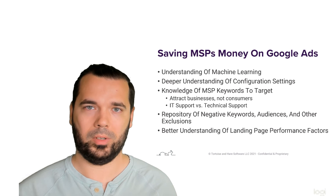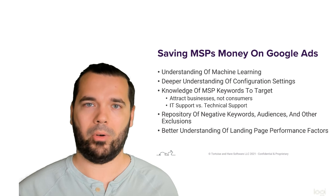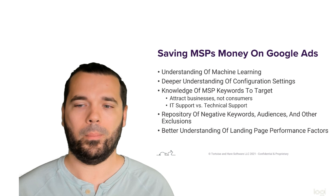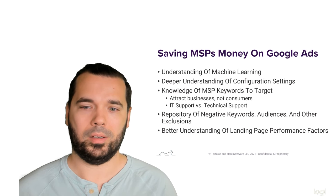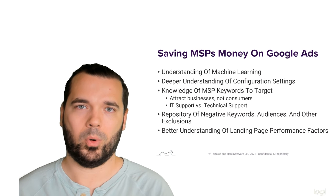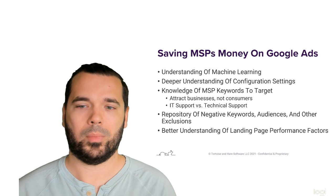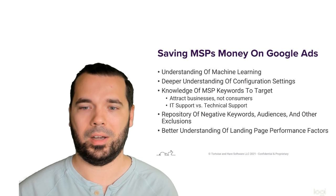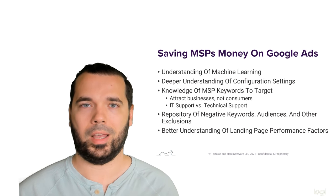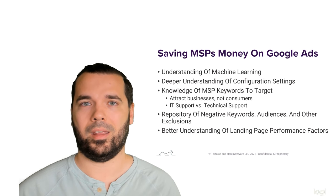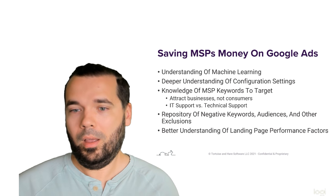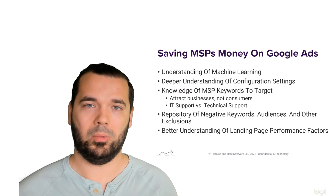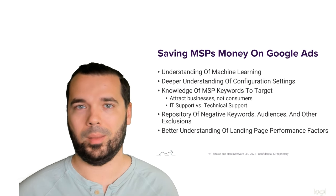A good example: I've advertised on IT support keywords versus technical support keywords. I found that IT support keywords have a much higher rate of B2B searchers, whereas technical support keywords do have B2B searchers but tend to attract a lot more people searching for technical support for their Comcast or AT&T. So we know the right keywords to target, how to structure your account, and how to develop a strategy based on your budget and advertising goals.